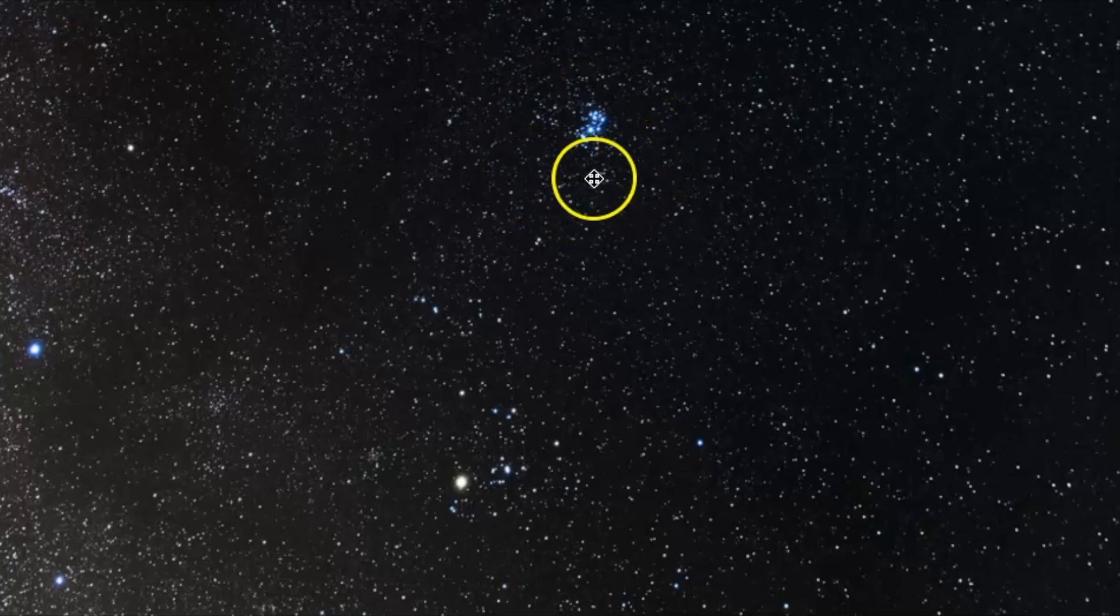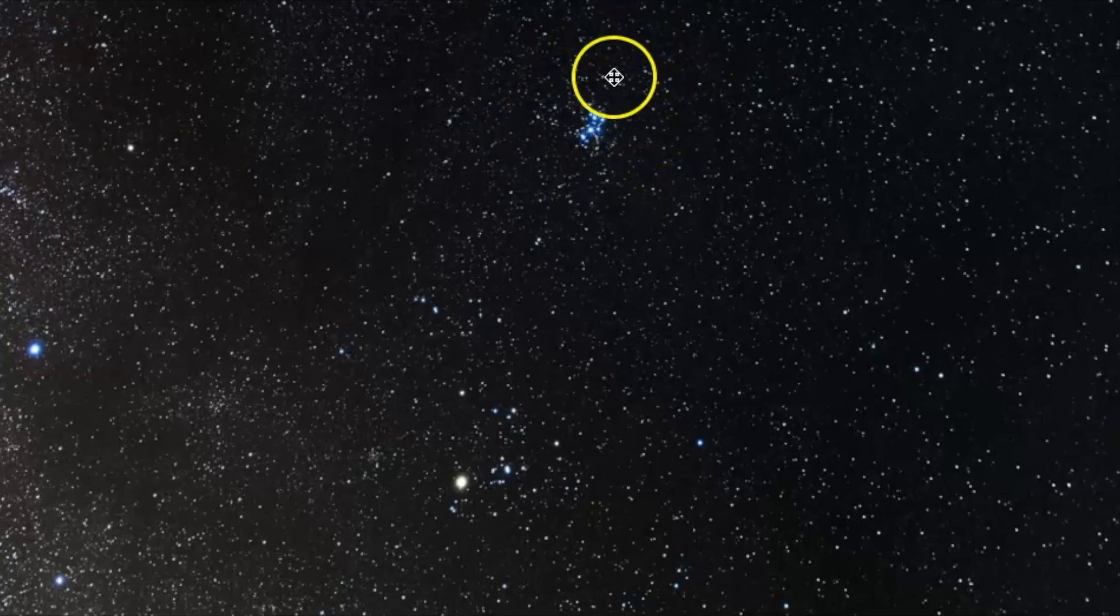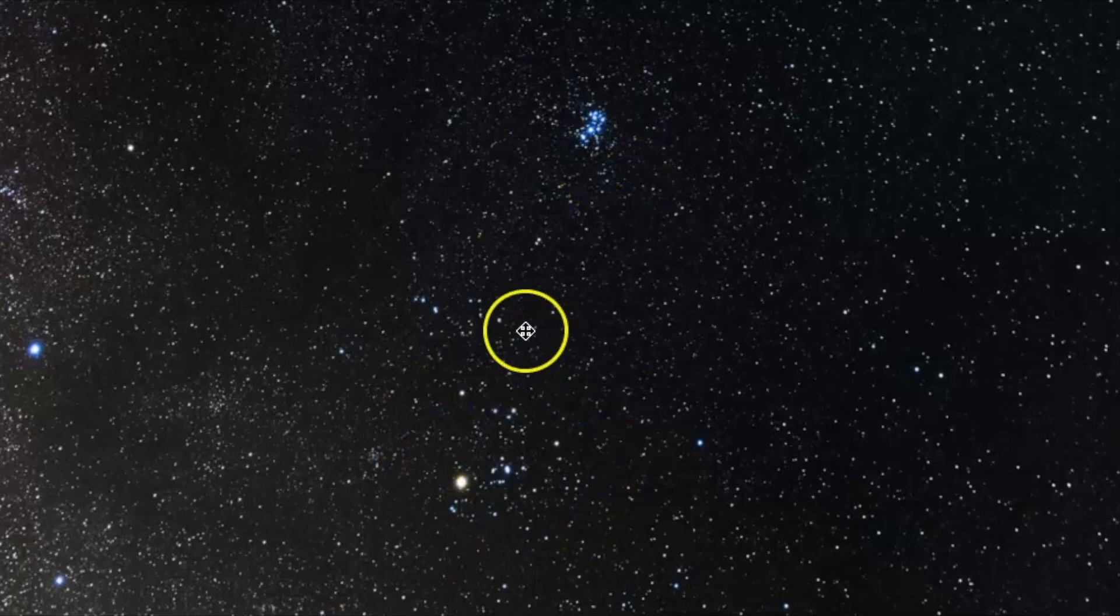This is the Pleiades. I use this star cluster all the time as a guide to help me find other constellations. In fact, the two easiest star clusters to identify in the sky are the Pleiades and the Hyades, both of which are in the constellation Taurus and right next to each other in the sky.